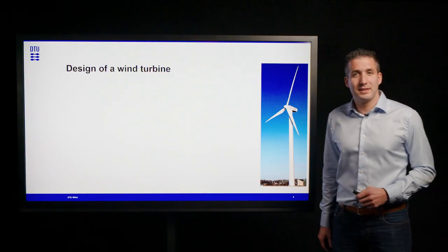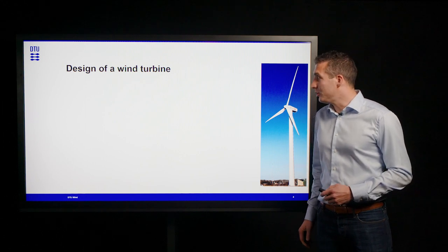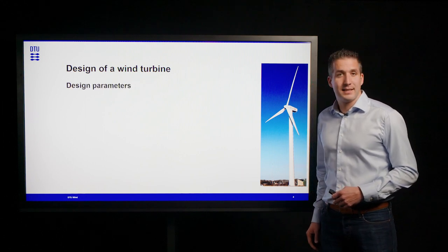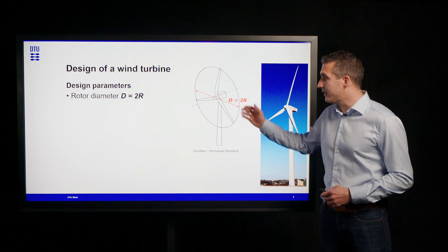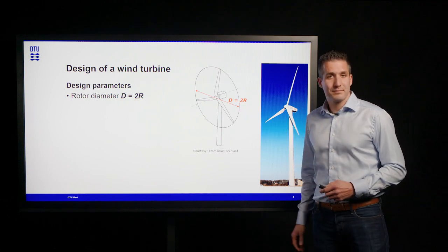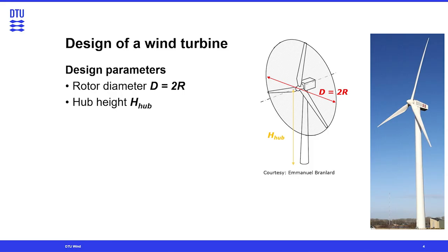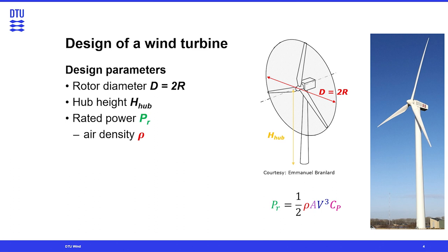So let's start with the design of a wind turbine. Usually the design starts with defining design parameters such as the rotor diameter or the hub height, which finally leads to the rated power. For calculating the rated power we have to know some variables and constants that go into the equation, for example the air density.